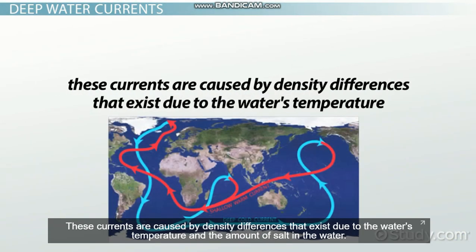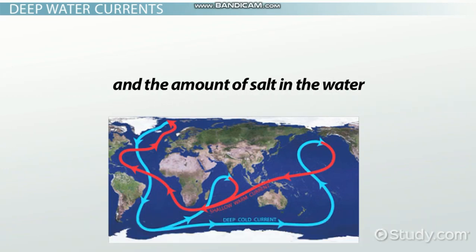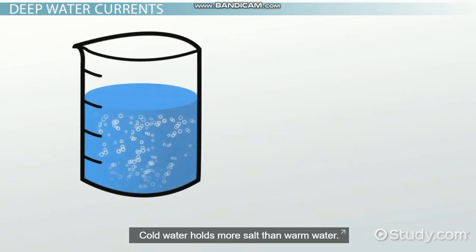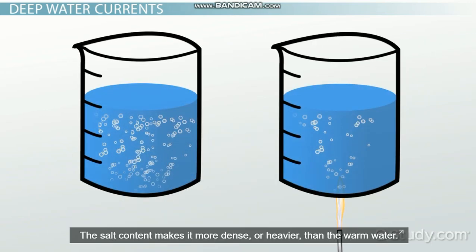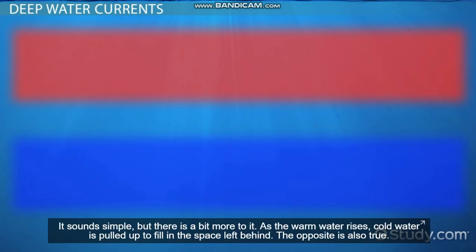These currents are caused by density differences that exist due to the water's temperature and the amount of salt in the water. This is called thermohaline circulation — thermo referring to temperature, and haline referring to salt. Cold water holds more salt than warm water. The salt content makes it more dense, or heavier, than the warm water. Gravity comes into play as the warmer, lighter water rises and colder, heavier water sinks.